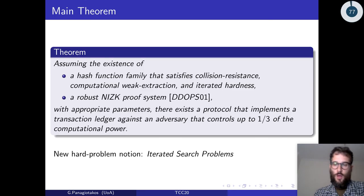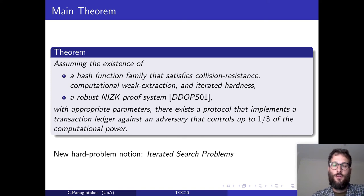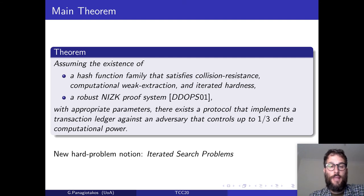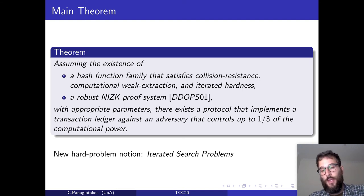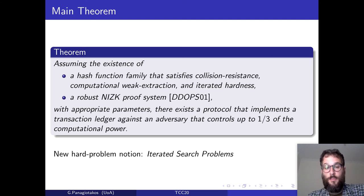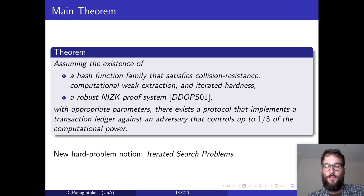Concluding, we have shown that assuming the existence of a hash function family that satisfies collision resistance, is a computational weak extractor, and satisfies iterated hardness, and a robust NIZK proof system with appropriate parameters, there exists a protocol that implements a transaction ledger against an adversary that controls up to one-third of the computational power. Moreover, in the process we have introduced a new hard problem notion called iterated search problems.